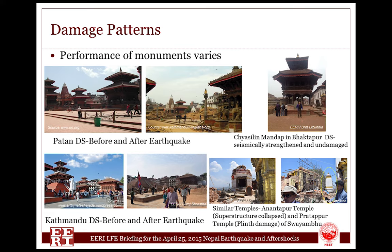In Patan Darbar Square, you can see many temples standing still but few temples being collapsed, like Char Narayan and Sankara Narayan Temple. While in Kathmandu Darbar Square, many temples like Kastamandap, Mosdegar, Narayan Vistu temples, Triloke Mon temple and Chasindegar were completely damaged. So in both Darbar squares, the damage pattern was quite different.